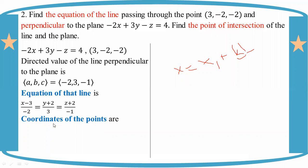The coordinate of the point is x1 plus kl. Using the point (3, -2, -2) and derived value minus 2, 3, minus 1 with parameter t: x = 3 - 2t, y = -2 + 3t, z = -2 - t.